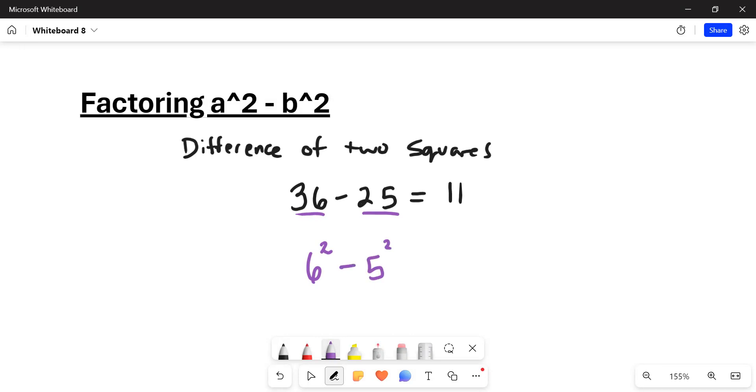Now of course, you can't just do 6 minus 5. That would give you 1. So you have to follow the order of operations. But there is something that can be done, which is kind of cool. You can multiply 6 times 6 to give you the 36, and you can multiply 5 times 5 to give you the 25. Watch what happens though when you put a plus and you put a minus. So in the order of operations, we have 6 plus 5 being first in the parentheses, 11, and 6 minus 5 being 1. And 11 times 1 is 11.